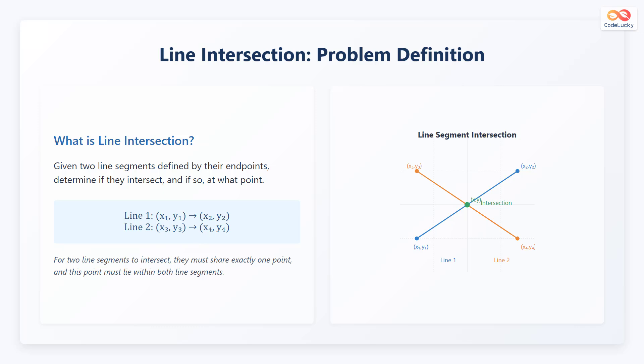Let's define the line intersection problem. Given two line segments defined by their endpoints, the goal is to determine if they intersect, and if so, at what point. We can represent line 1 as a segment from point (X1, Y1) to point (X2, Y2). Line 2 goes from point (X3, Y3) to the point (X4, Y4).